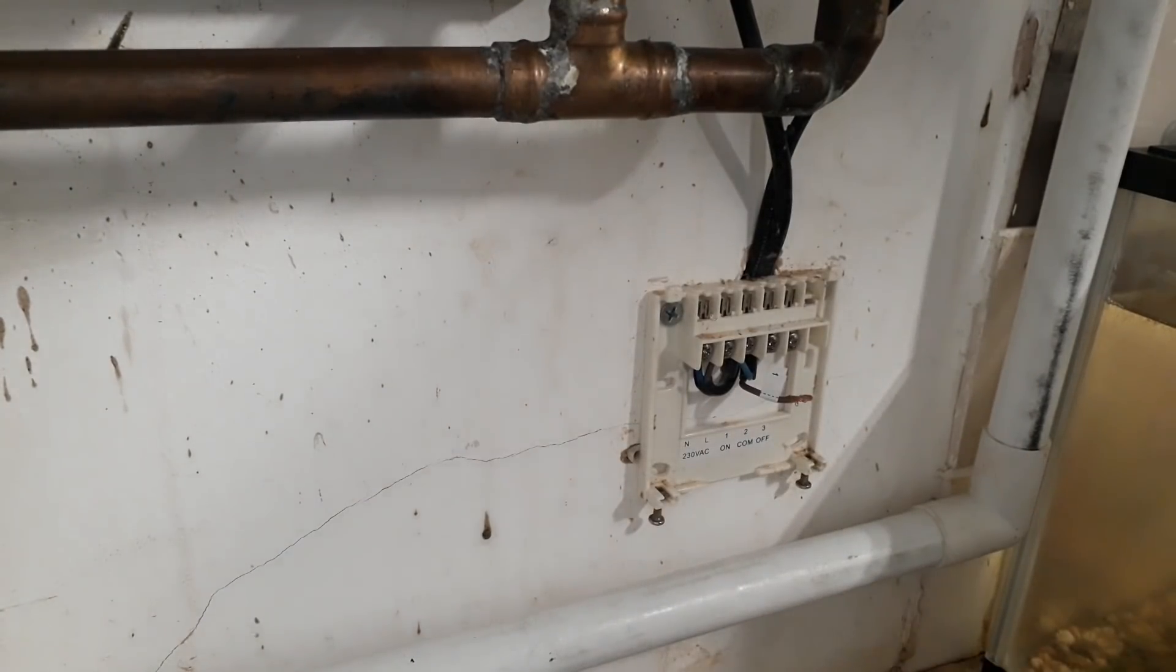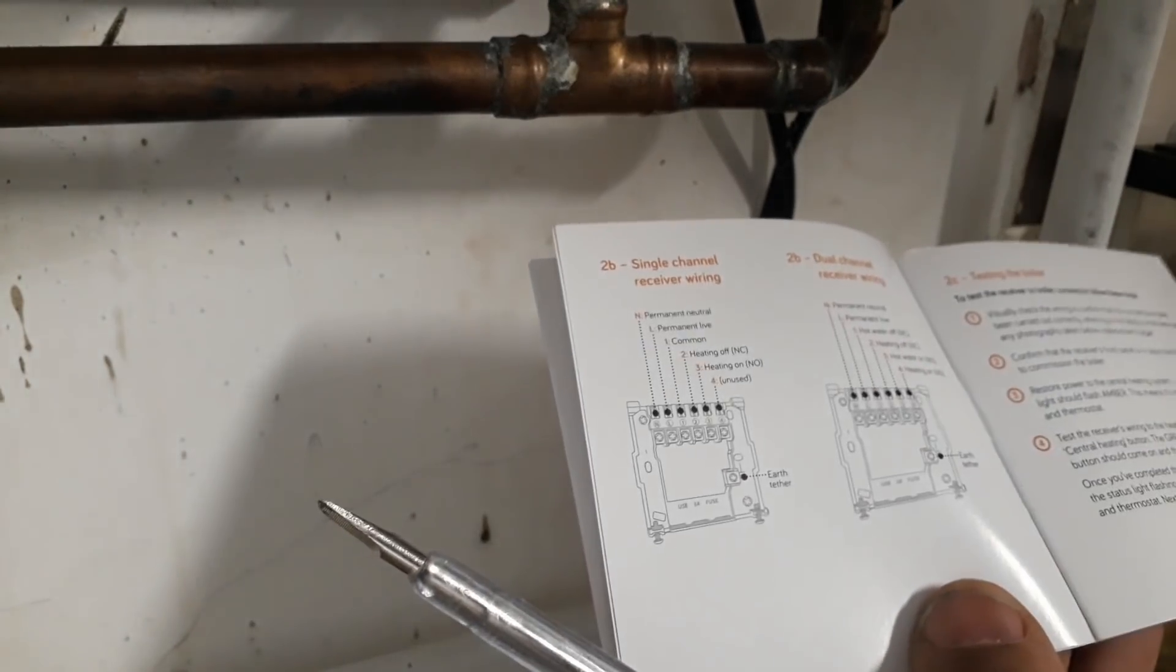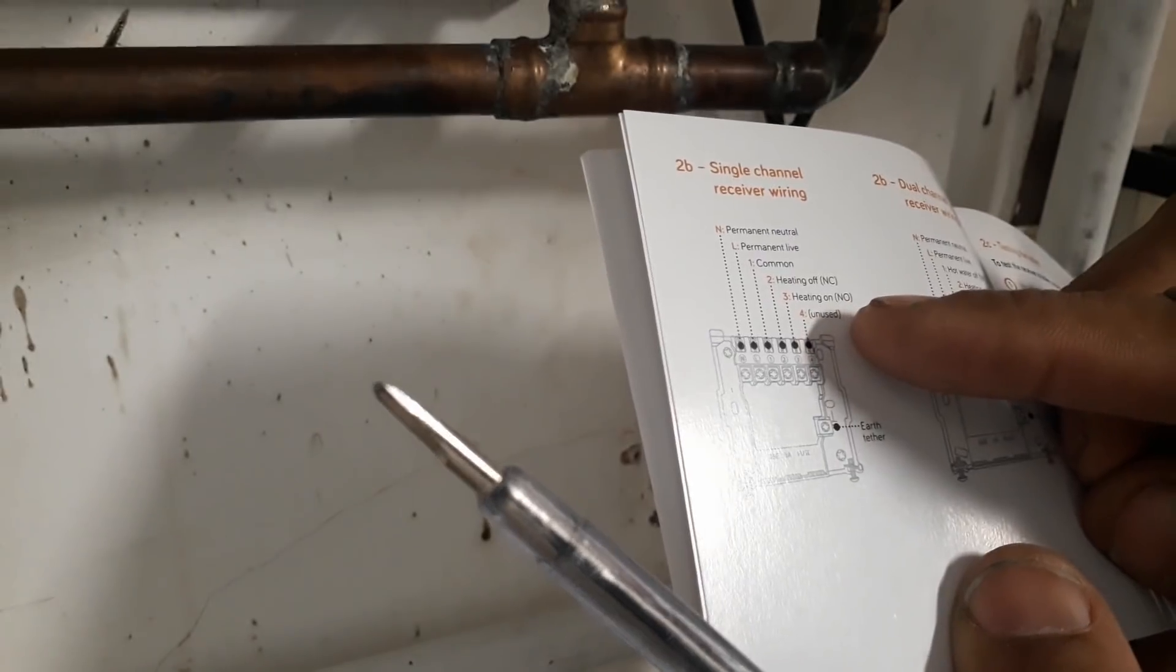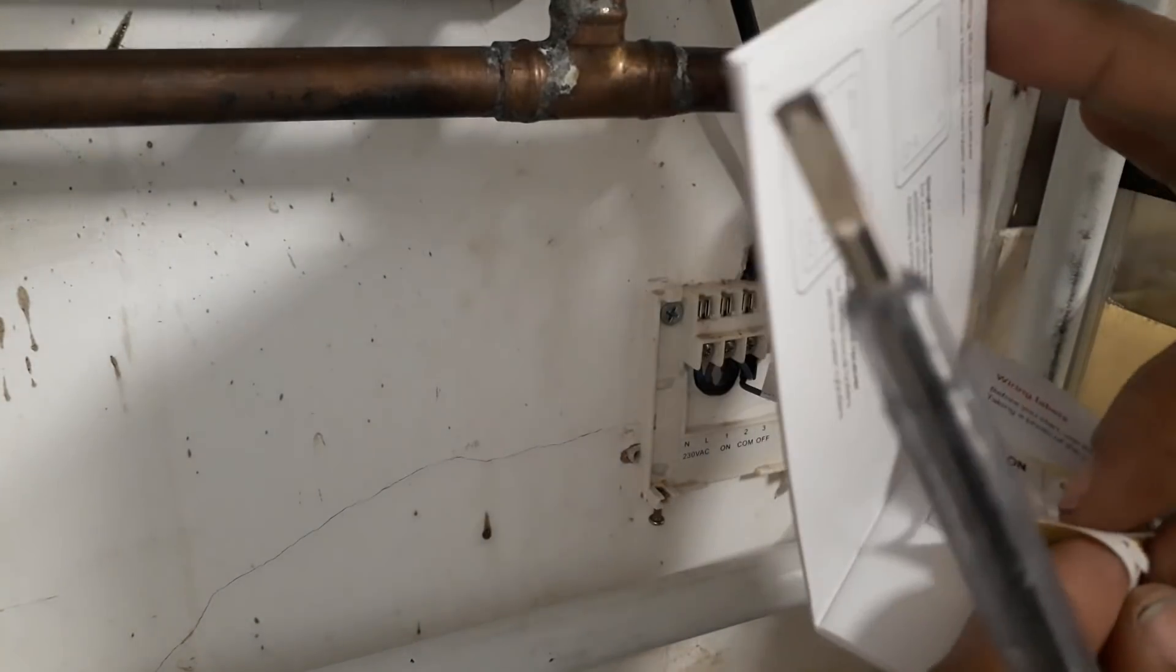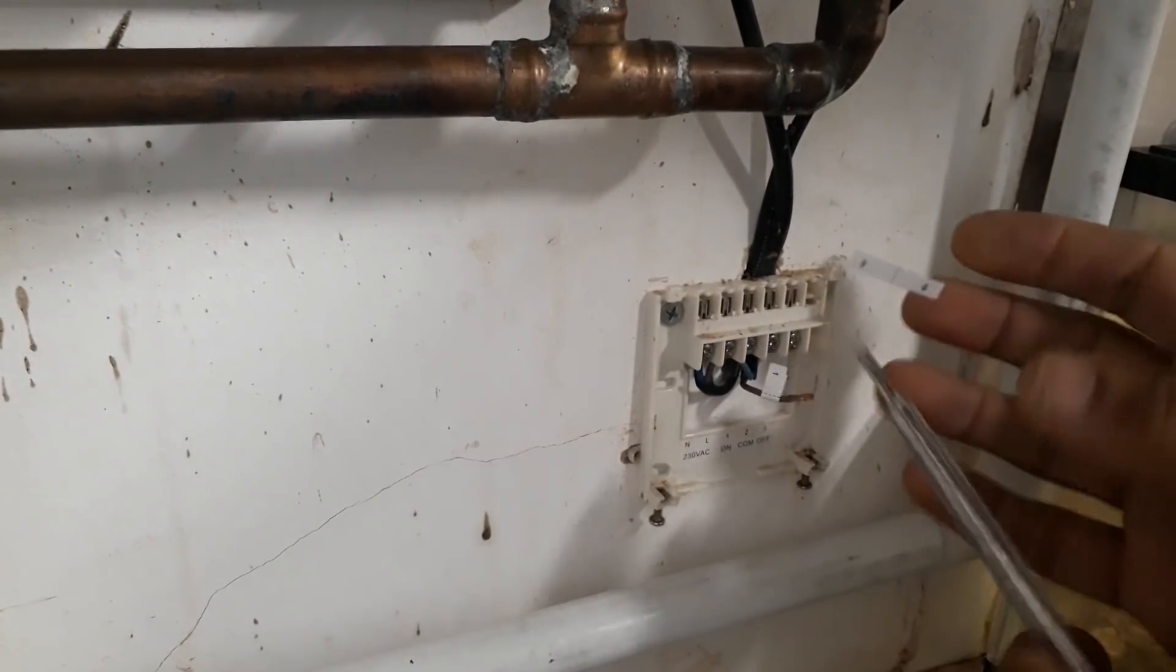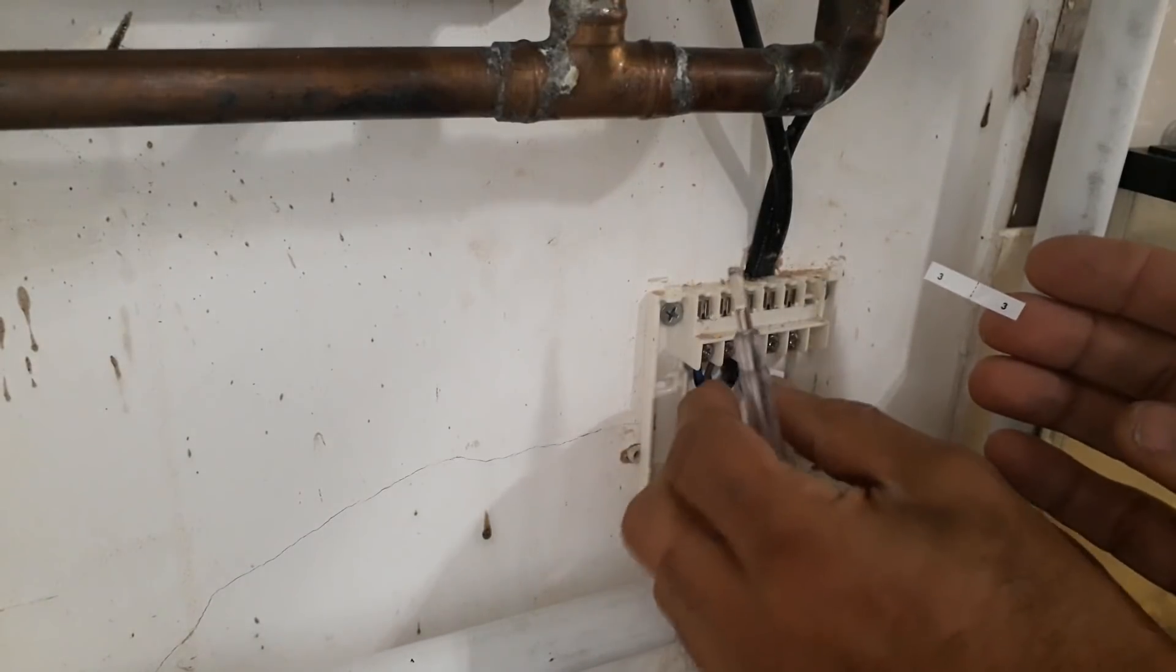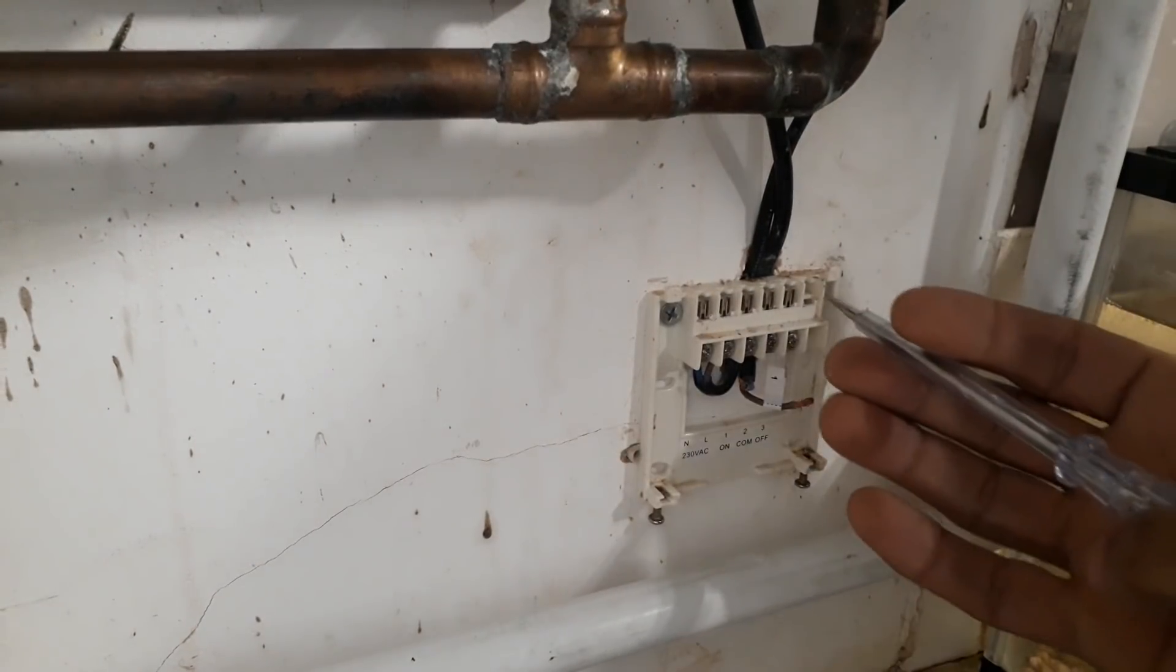The next one is going to be the on. The on is number three. So I'm going to put a number three on the on. Sticker off. Undo this one here. You know what I'm going to do, I'm going to take the plate off.